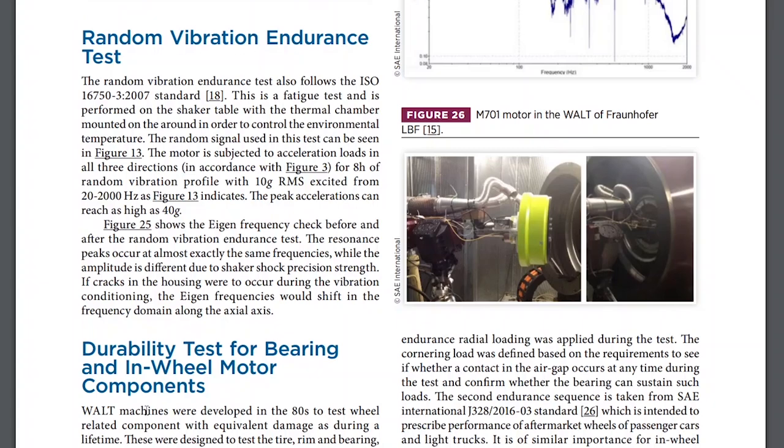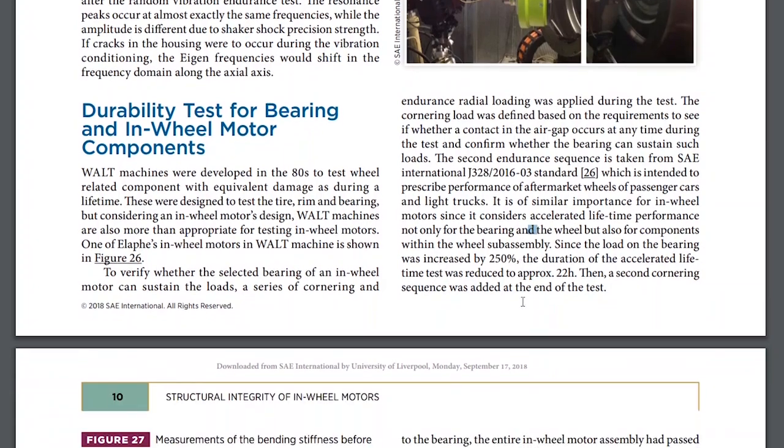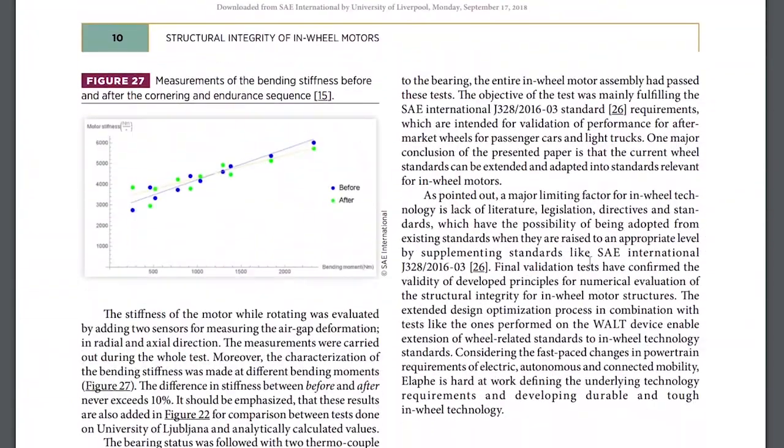And then there's this thing called a Walt machine, which I'd never heard of before. Walt machines were developed in the 1980s to test wheel related components. It's a well-known testing setup that basically is used to test the hubs and the braking components of a car. It would go through all the loads that you would expect the car to go through within its accelerated lifetime performance. They stuck their in-wheel motor into this Walt machine and tested it out.